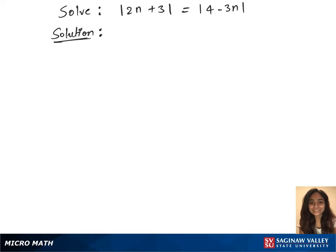To solve this, this equation is equivalent to 2n plus 3 equals 4 minus 3n or 2n plus 3 equals minus times 4 minus 3n.